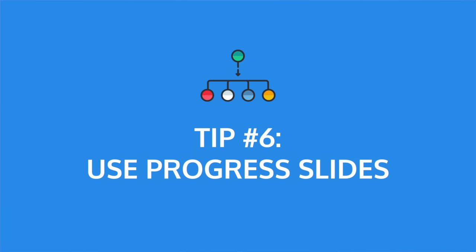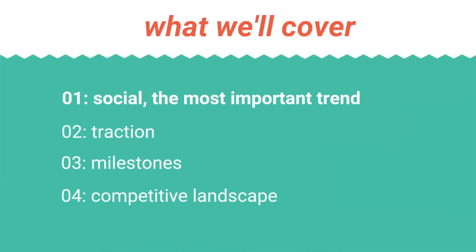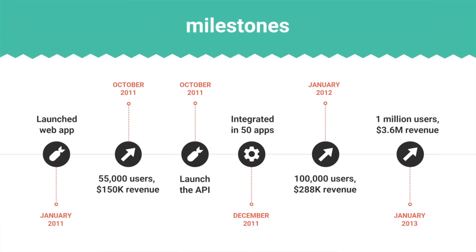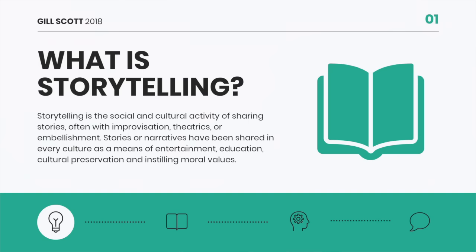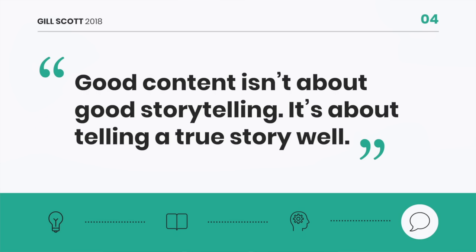Tip number six: use progress slides to keep your audience oriented and engaged. It's easy for your audience to get lost in a long presentation, especially with a lot of slides. Progress slides are used throughout your presentation to denote the beginning and end of major sections. Generally, they're designed like agendas, appearing after introductions or title slides, giving your audience the sense that they're making progress. Another way to show progress is to add a progress bar to the foot of your slides so people can track where you are.